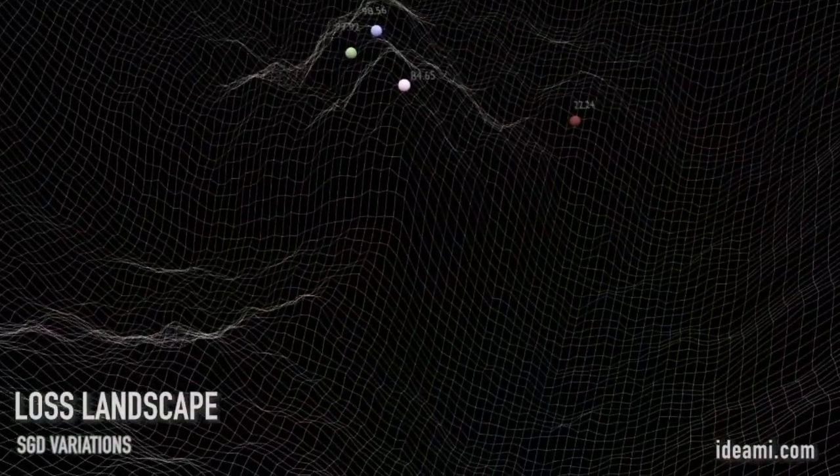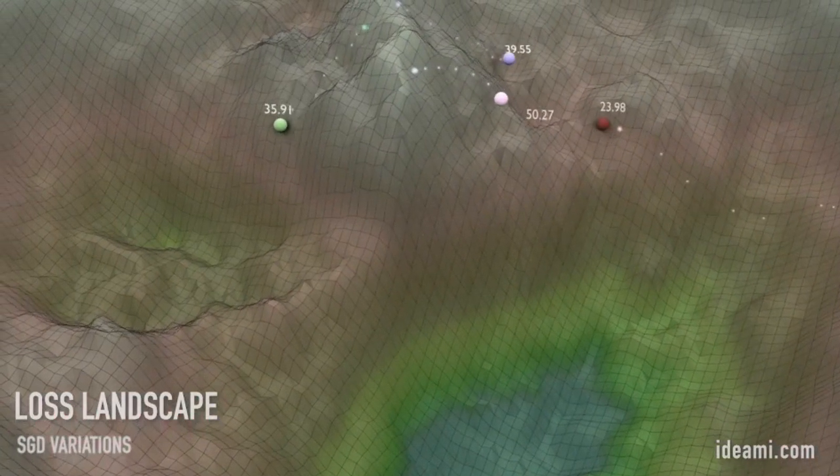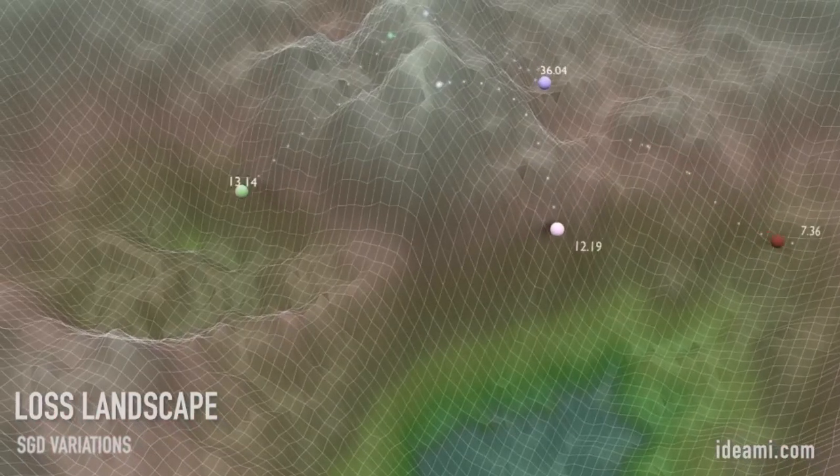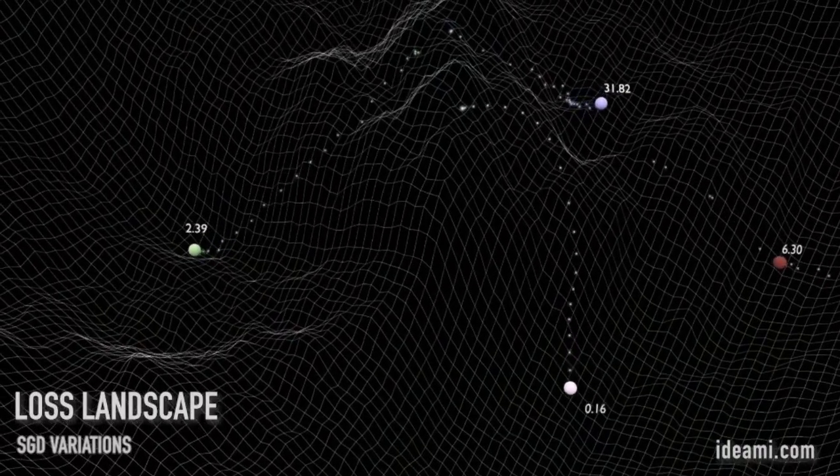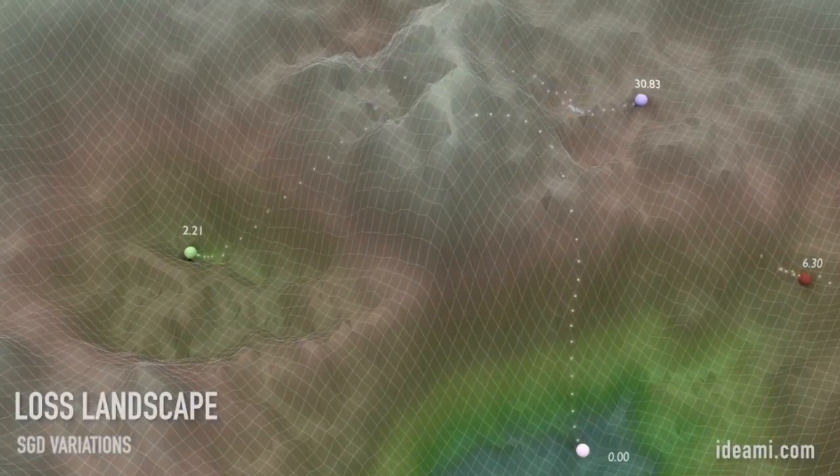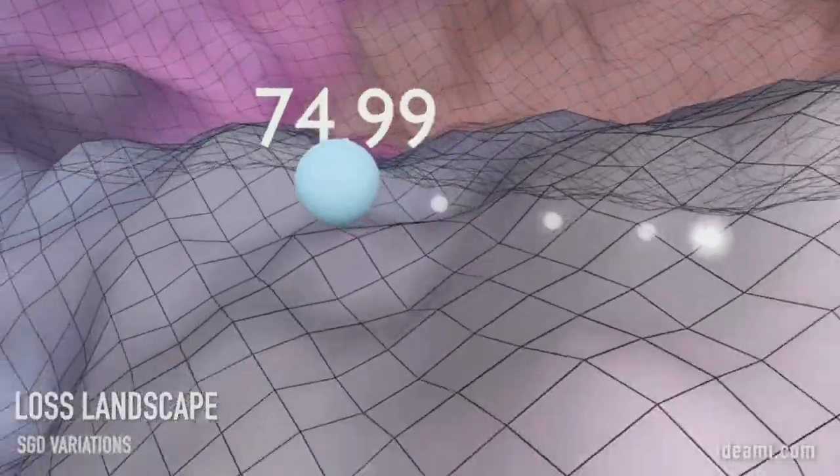In today's video, we will look at a modified version of stochastic gradient descent which introduces the concept of momentum. As a reminder, stochastic gradient descent is an optimization algorithm that works iteratively. It is well suited for neural network optimization. The algorithm works well, however it does tend to get stuck in local minima.